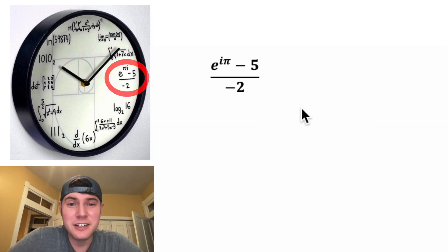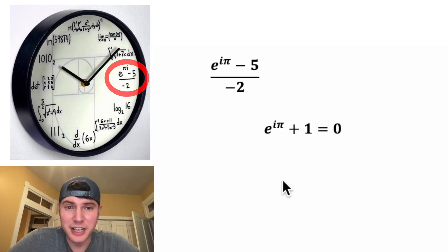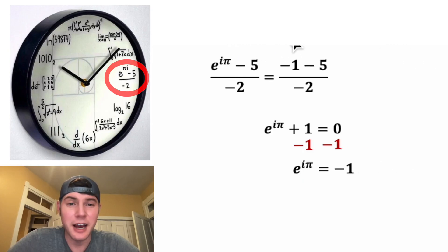Now for the three o'clock hour, we have e to the i pi minus five over negative two. You may be familiar with Euler's identity, e to the i pi plus one equals zero. After we subtract one from both sides, we get e to the i pi is equal to negative one. So we can substitute negative one in for the e to the i pi. Negative one minus five is negative six, so this is negative six over negative two, which is equal to three. So this is exactly three o'clock.